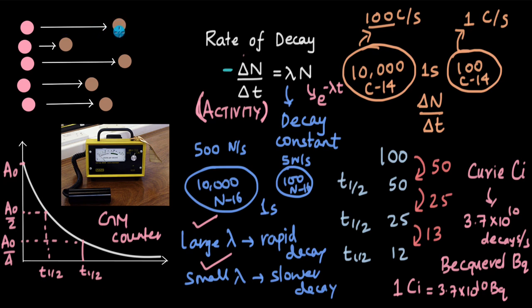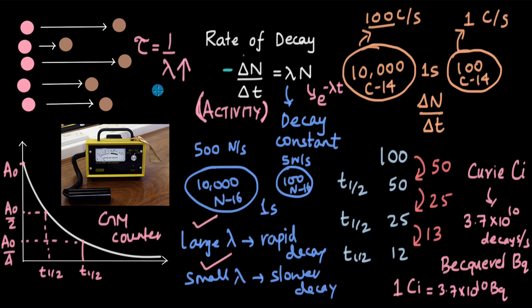Mean life is calculated by adding up all the individual lifetimes — t1, t2, t3, t4, t5, and so on — and dividing by the number of radioactive atoms present. After the calculus involved, the mean life tau equals 1 by lambda. This makes sense: if lambda is high (high probability of decay), the mean life will be very small; if lambda is low (slow decay), the nuclei remain radioactive longer and the mean life is greater.